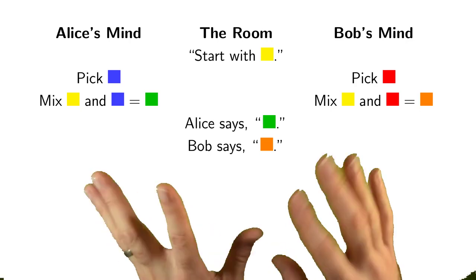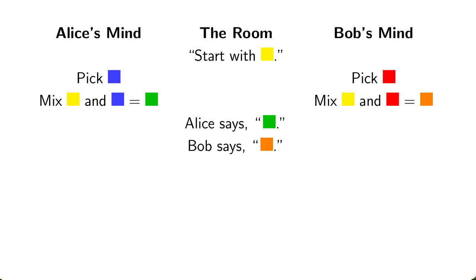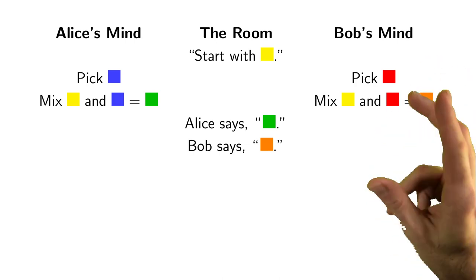Now at this point, what do people know? Everybody in the room knows about yellow, about green, about orange, but only Alice knows her secret color, blue, and only Bob knows his secret color, red.